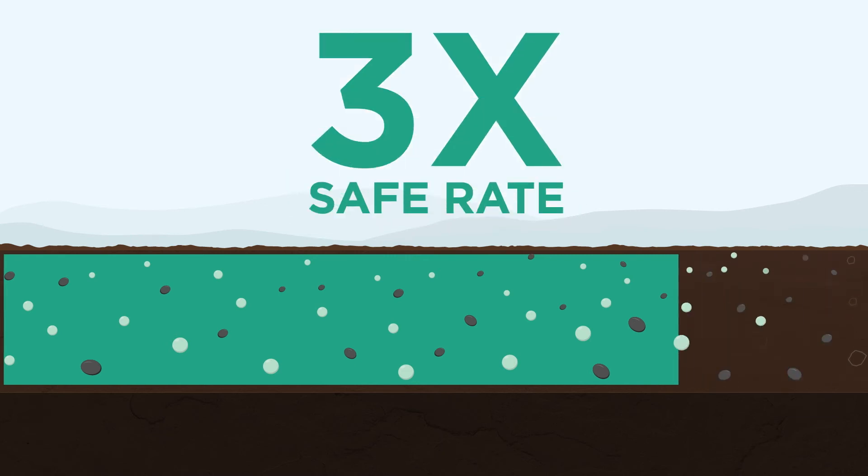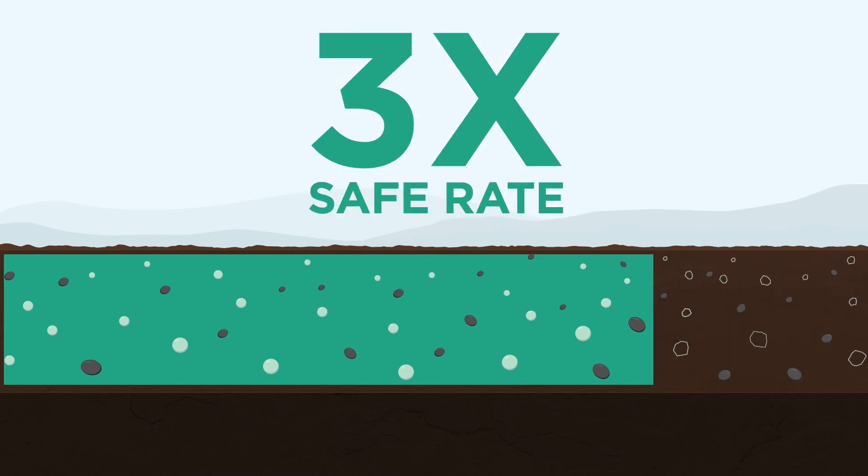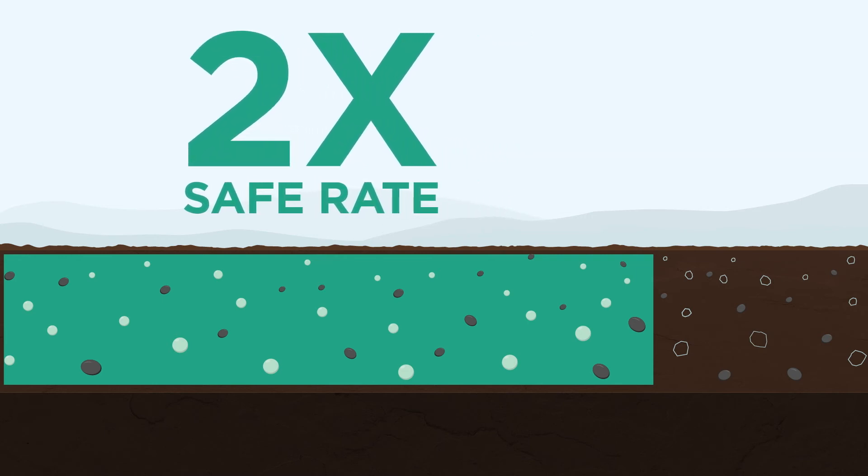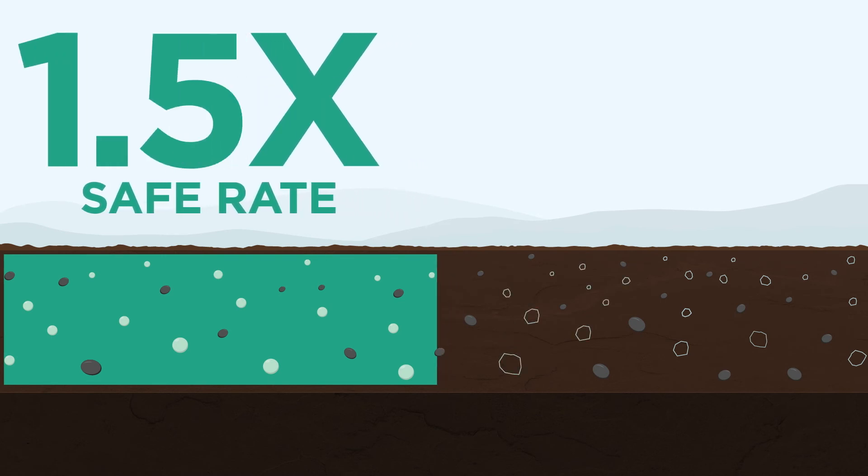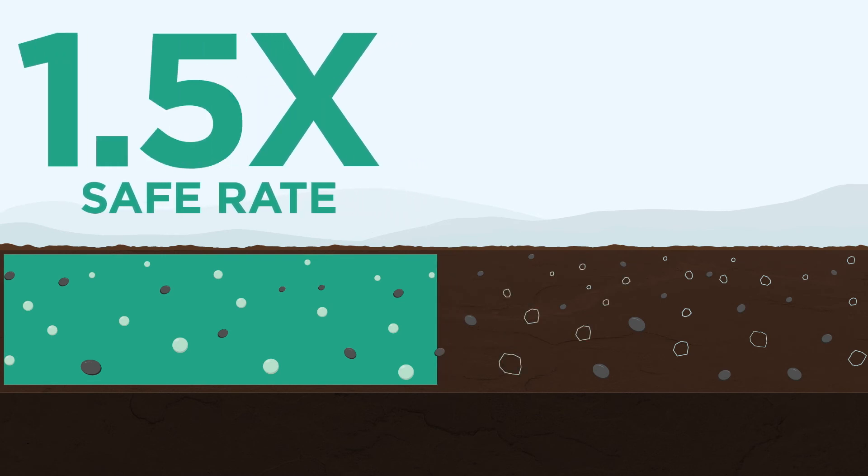For a blend using ESN for 75% of the total N, we suggest dropping back to two times the safe rate of urea to account for the effects of the soluble fertilizer used with the ESN. When ESN is 50% of the total N rate, one and a half times the safe urea rate is indicated.